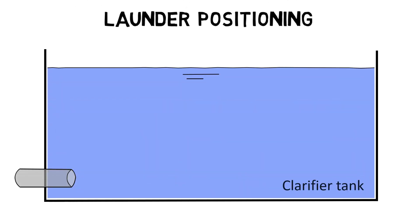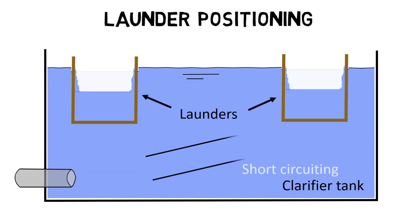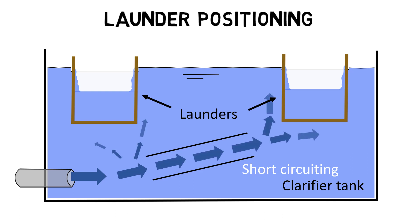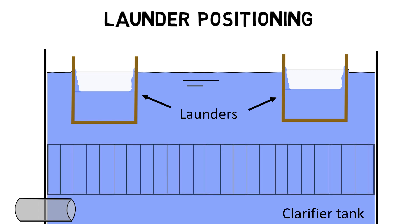Furthermore, the spacing of effluent launders plays an important role in reducing water short-circuiting within the clarifier basin. If the effluent launders are positioned unevenly in the basin, or if the distance between effluent launders is too large, water will flow along a nearly direct pathway from the inlet to the outlet, often resulting in shorter settling times compared with the calculated or presumed detention times. If tube settlers are used, their installation height must also be considered for the effluent launder distances.